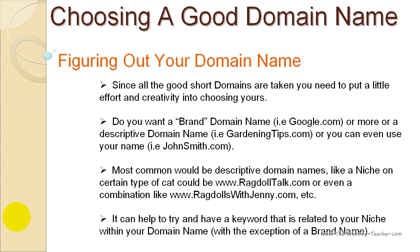Try to choose a domain name that has at least one keyword in it that relates to the topic or niche of your blog. So if your blog is about cats and ragdoll cats, then ragdollswithjenny.com is a great example, as it has a related keyword in the domain name, which is 'ragdolls.' There is always an exception if you choose to use a brand name, but it's uncommon to use brand names for blog domain names.